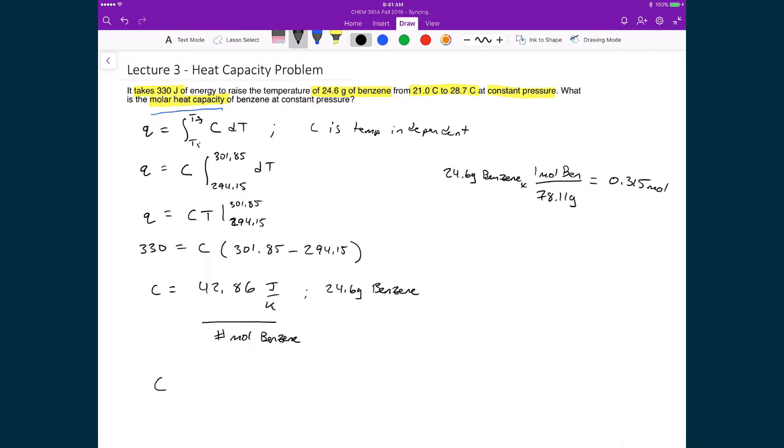And so, then, to find the molar heat capacity, and in this case, since the process is at constant pressure already, then I can add that P there as well. And that's equal to the heat capacity that we just calculated divided by the number of moles. So, that's 42.86 divided by 0.315. And in the end, what we get is 136.1 joules per mole Kelvin.